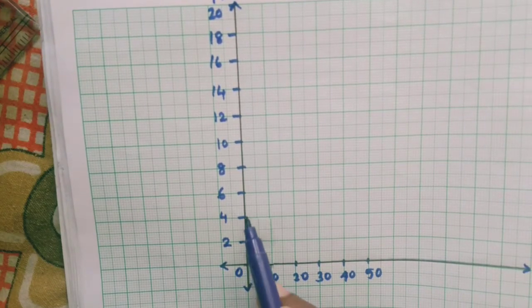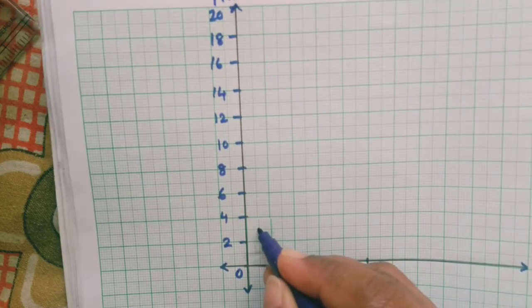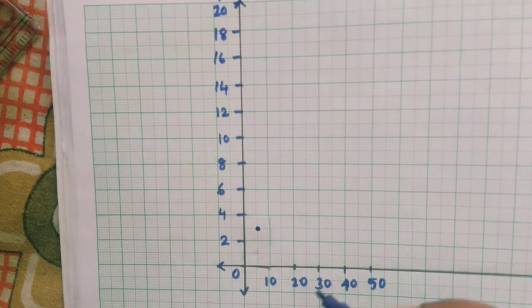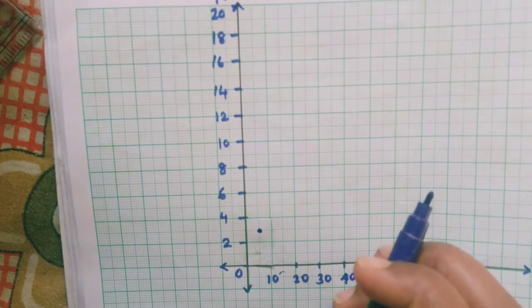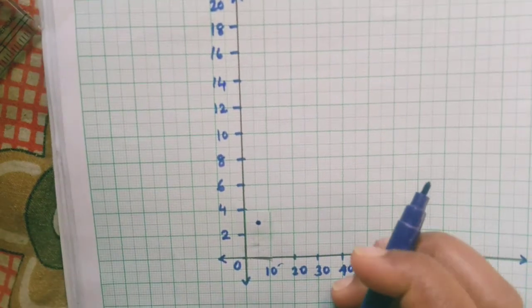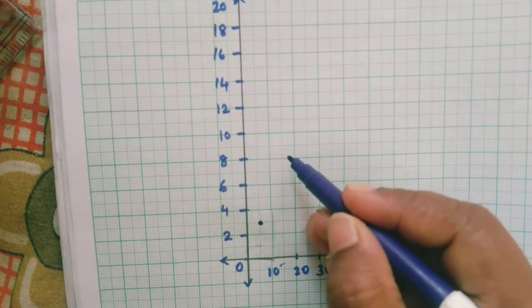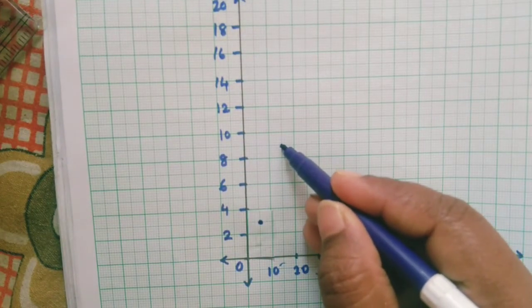3 is in between 2 and 4, so this is 3. And next the class mark is 15. For 15 you are going to plot 9. Frequency is 9. 9 will come in between 8 and 10. I will mark it here.